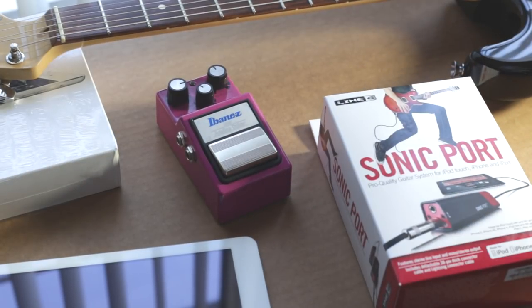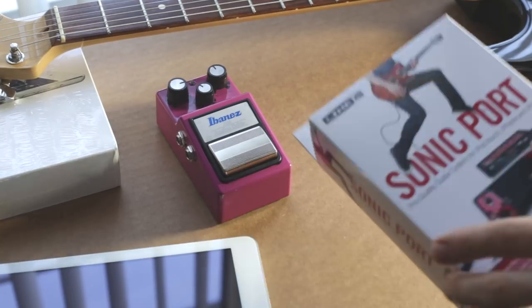See how this all works out in the guitar world, maybe play a few tones, and then hopefully in a follow-up review compare it maybe to the real deal, some real stomp boxes and amps. So this is the Line 6 Sonic Port.